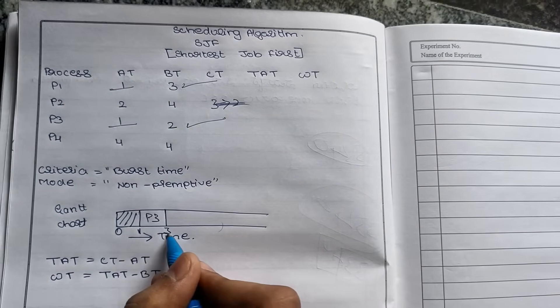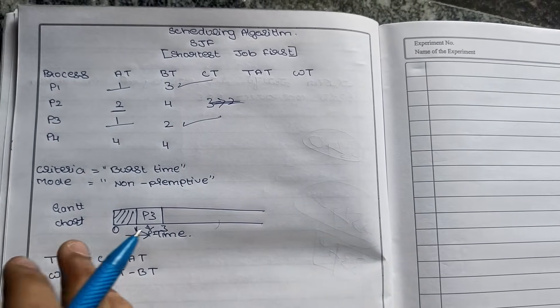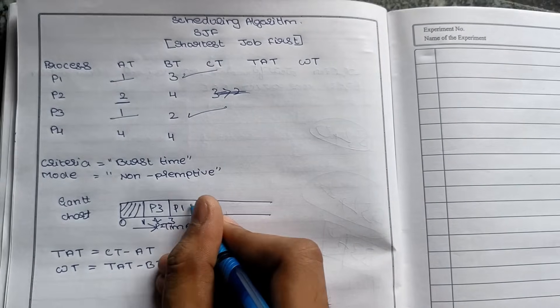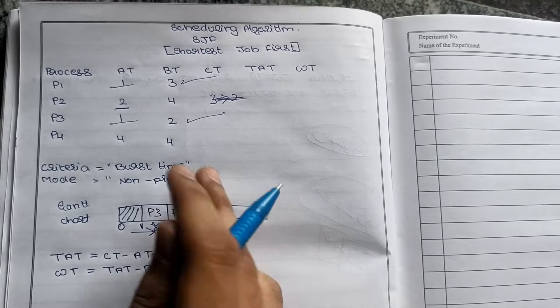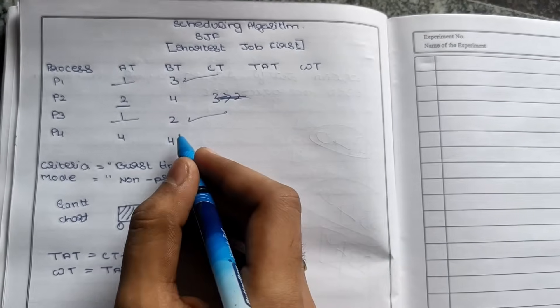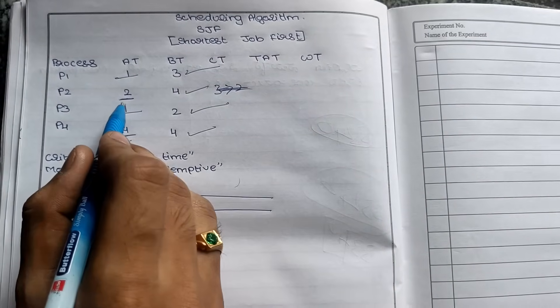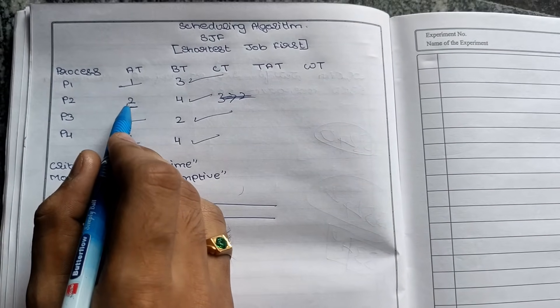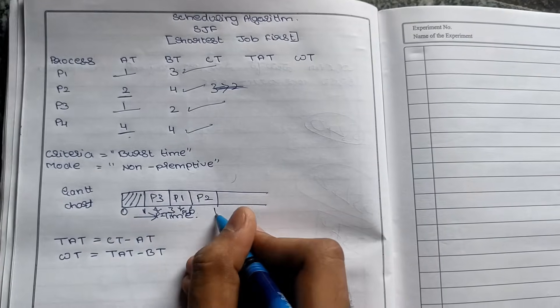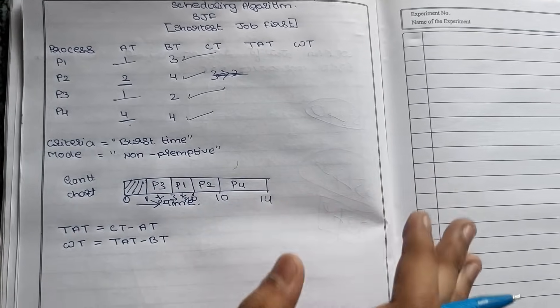One plus two is three, so completion time is 3. Next, we see P2 arrived at time 1 and by time 3, P2 is already there. I won't give P2 next because looking at burst times, 3 and 4 - 3 is less than 4. So I assign P1 next. After the full job completes, 3 plus 3 equals 6. Next at time 6, P4 already arrived. Now we compare P2 and P4. Both have burst time 4, so we look at arrival time. P2 arrived first, so we give process 2 next. Burst time is 4, so 6 plus 4 is 10. Next P4 remains, so 10 plus 4 is 14.